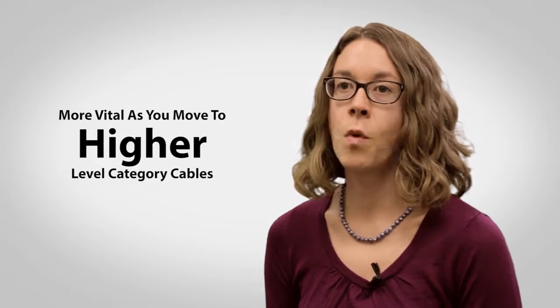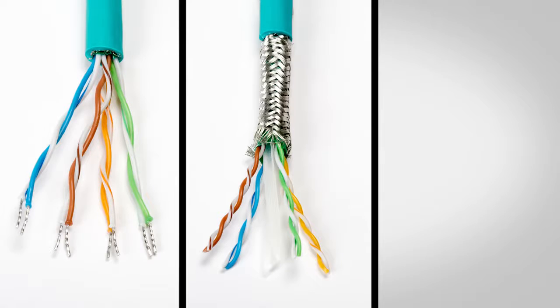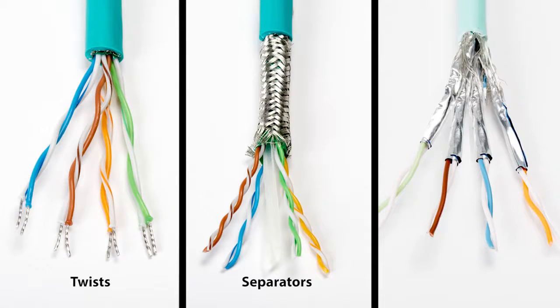This becomes even more vital as you move to higher level category cables, for instance, CAT 6A or CAT 7. The pairs in these cables are further protected from one another by the amount of twists per pair, physical separators inside the cable, or even foil shielded pairs.